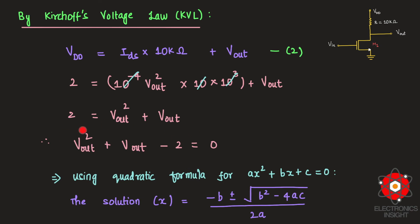Therefore, this we can rewrite it as Vout² + Vout - 2 = 0. Now this equation is similar to the equation of ax² + bx + c, and if we have such an equation we can write the solution for the corresponding equation as x = (-b ± √(b² - 4ac)) / 2a.